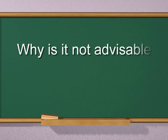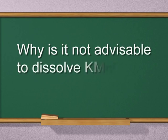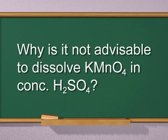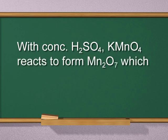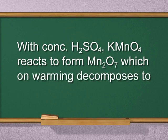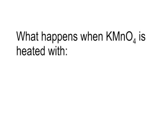Question 2: Why is it not advisable to dissolve potassium permanganate in concentrated sulfuric acid? Answer: With concentrated sulfuric acid, potassium permanganate reacts to form manganese heptoxide (Mn₂O₇), which on warming decomposes to manganese dioxide.